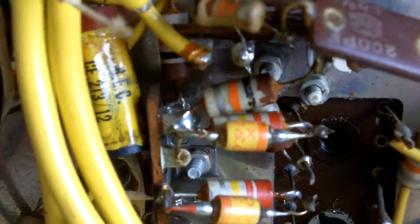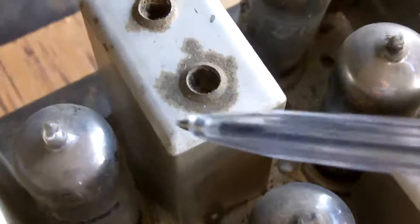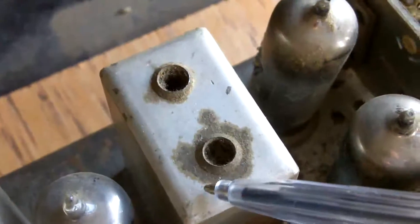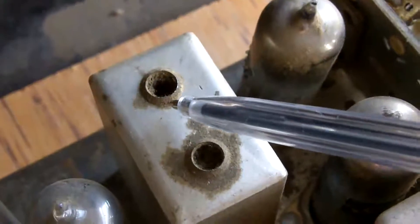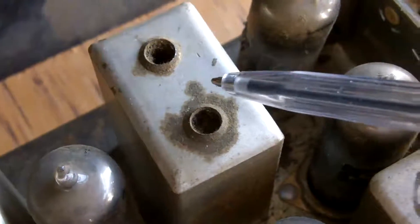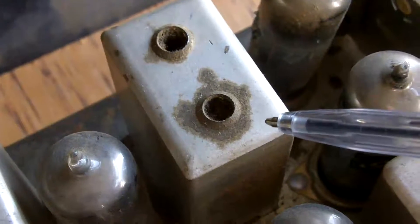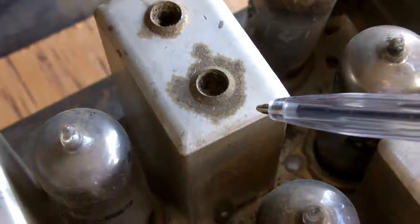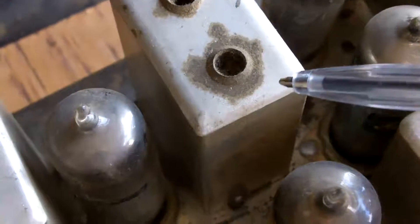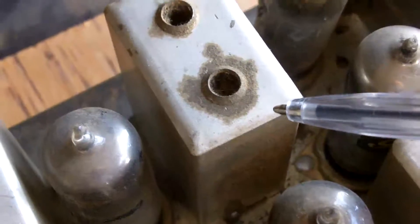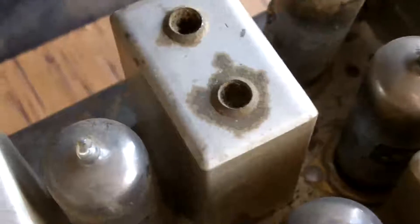And I'll just show you the can, the other side. This is the can for the ratio detector coils. And it shares that space with the second IF transformer for the AM section, for the amplitude modulated section. So these are the components in the radio.